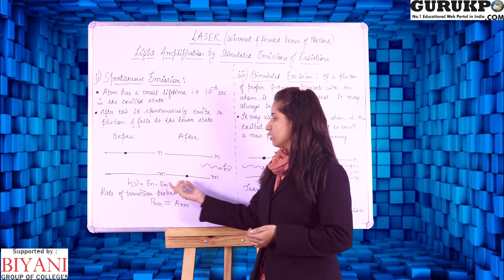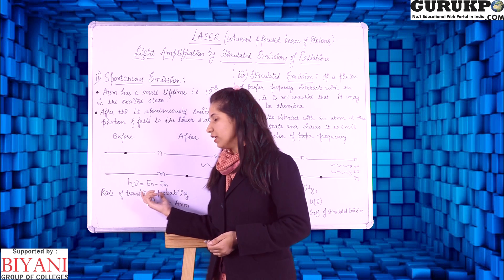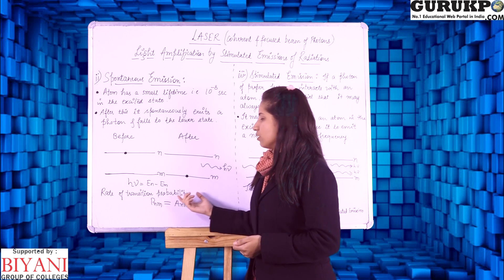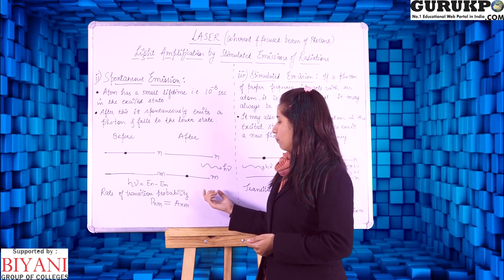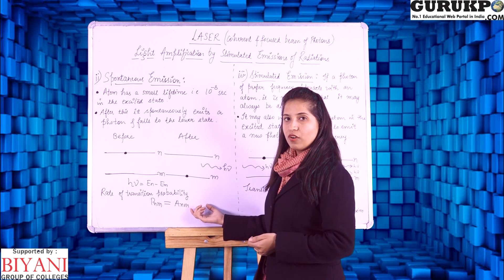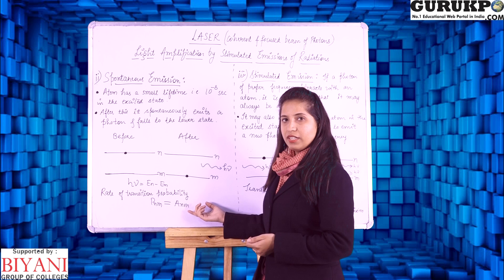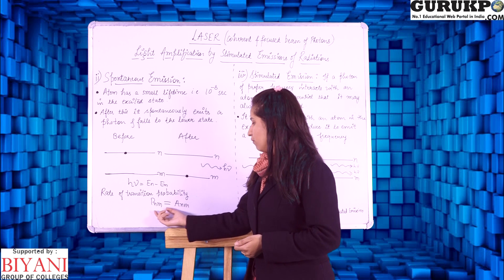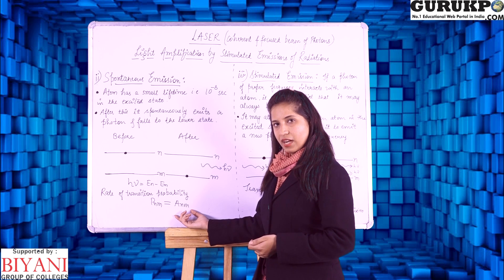And here the photon energy is the difference in the energy En minus Em. And rate of transition probability here it will depend only upon the number of atoms not on the density. So PNM will be equal to the ANM.